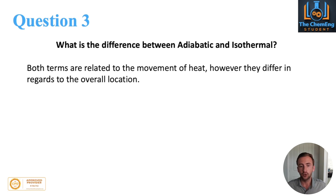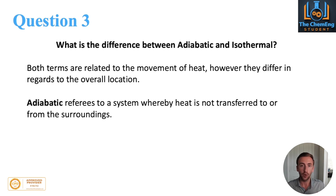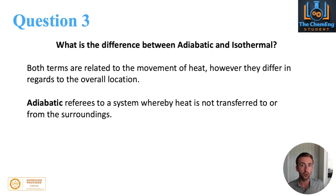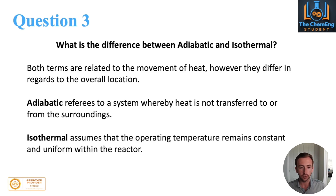Both terms are related to the movement or association of heat. However, they differ in terms of overall location. Adiabatic refers to a system whereby there is no heat or mass transferred to or from the surroundings — you would use a jacket in order to maintain adiabatic conditions. Whereas isothermal conditions assume that the operating temperature remains constant and uniform within the reactor itself, with no fluctuations in operating temperature.